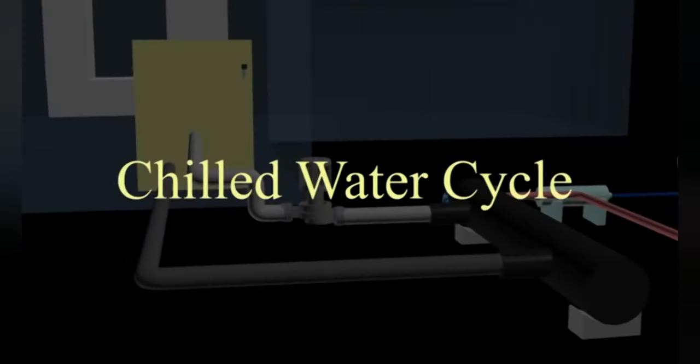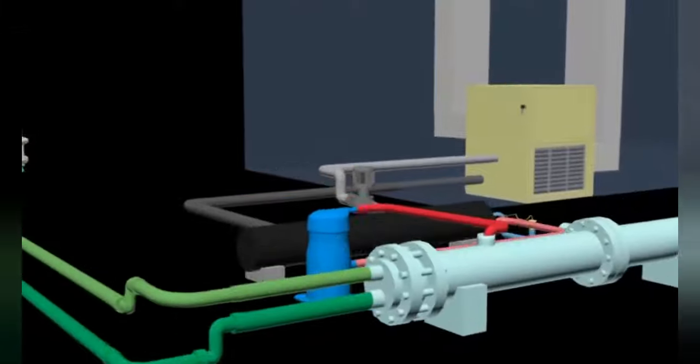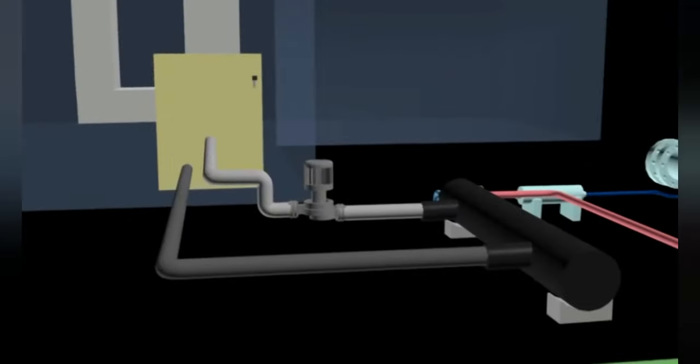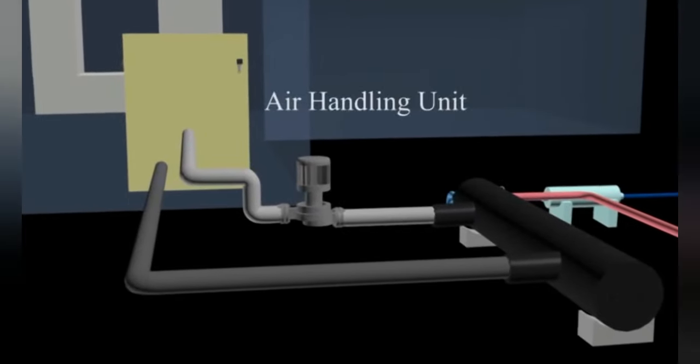The chilled water cycle consists of two basic components: the air handling unit and the water pump.